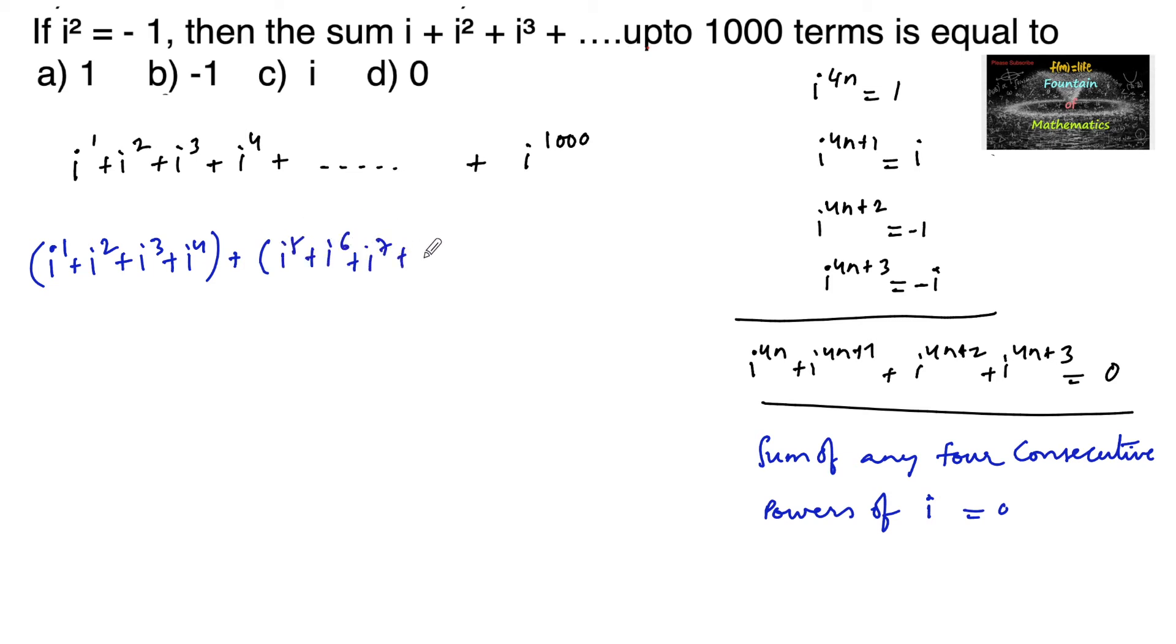and so on, even to the last terms: i^997 + i^998 + i^999 + i^1000. This works because 1000 is divisible by 4.